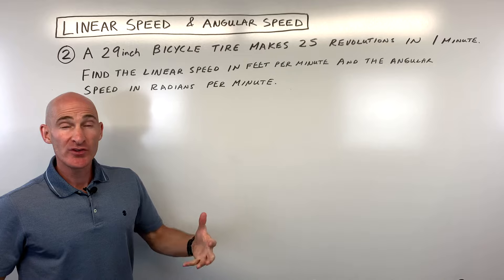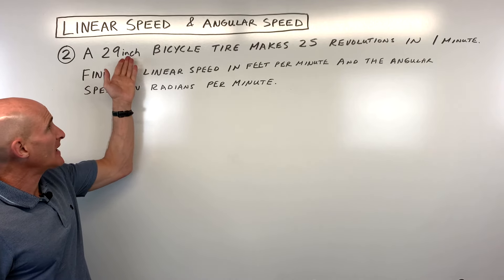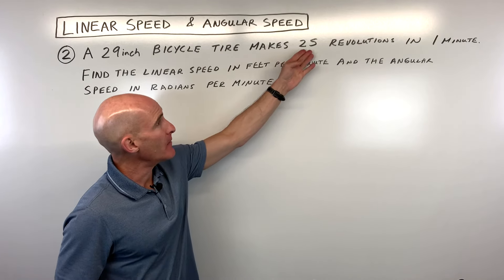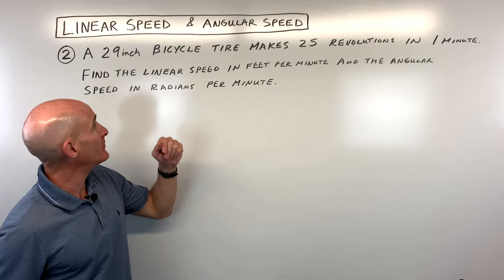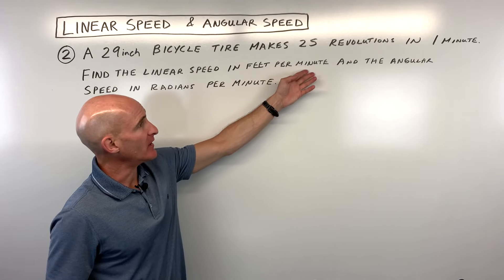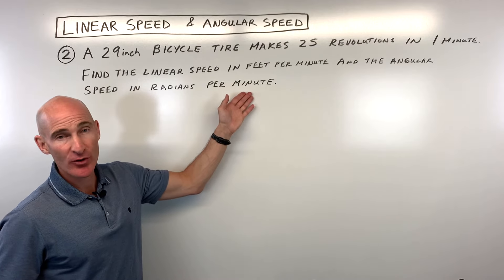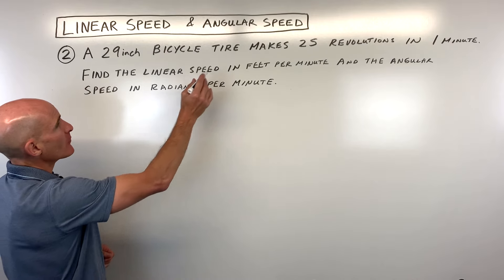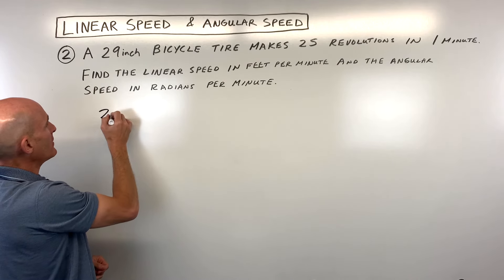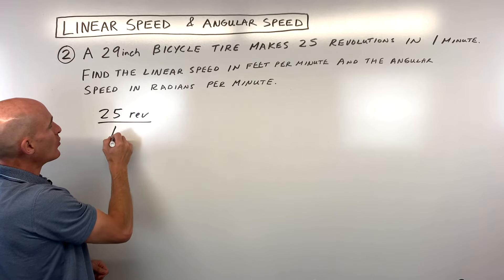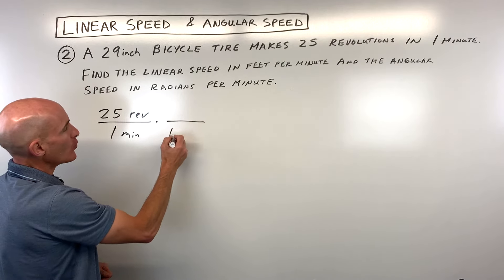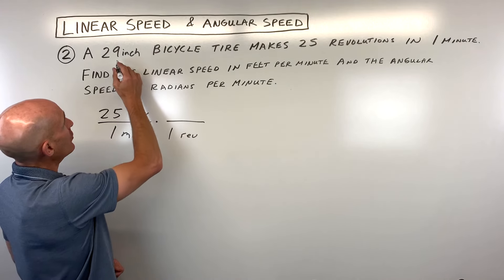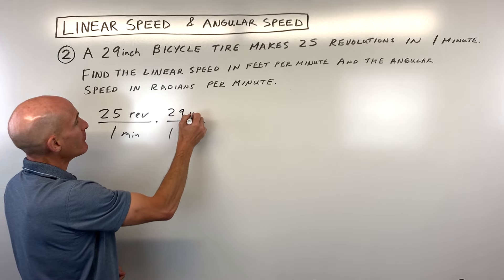See if you can challenge yourself and do this second problem on your own. We have a 29-inch bicycle tire — and when they say 29 inches, that means the diameter is 29 inches. It makes 25 revolutions in one minute. We want the linear speed in feet per minute and the angular speed in radians per minute. To solve this, I'd start with 25 revolutions per one minute, and for every one revolution, the tire travels 29 pi inches.